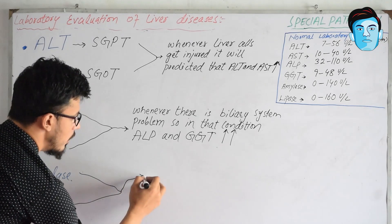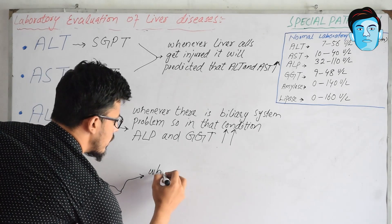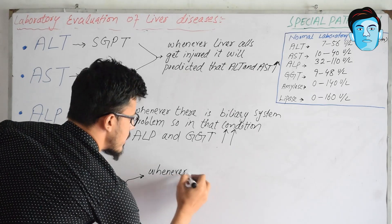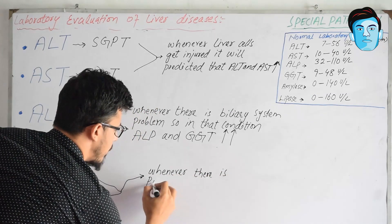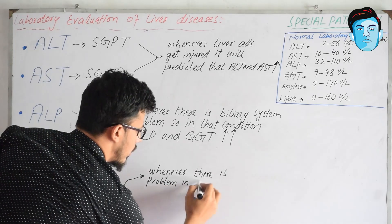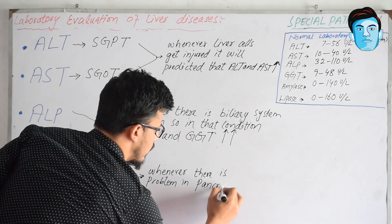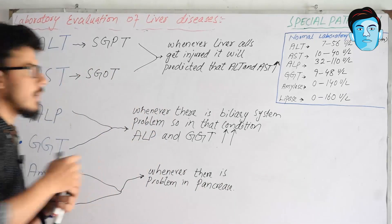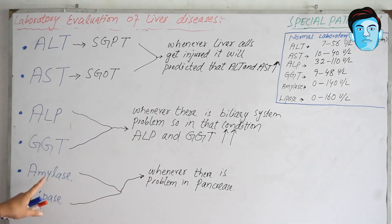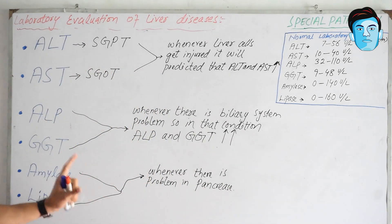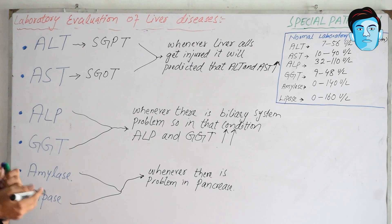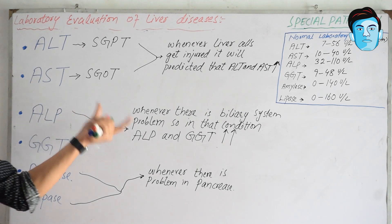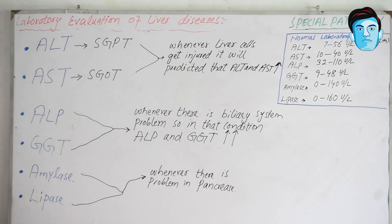Amylase and lipase values get increased from the normal value whenever there is a problem in the pancreas. Whenever the pancreas gets injured, amylase and lipase get elevated. Amylase is more sensitive and lipase is more specific.